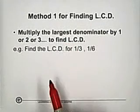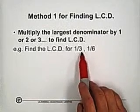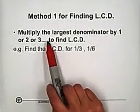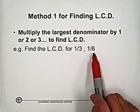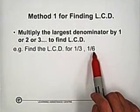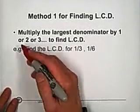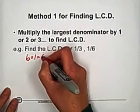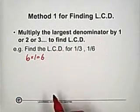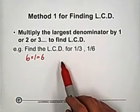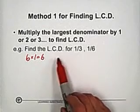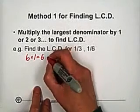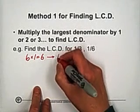The first example, to find the least common denominator for one-third and one-sixth. Followed by the rule, multiply the largest denominator. The largest denominator here is six by one to see if it is divided by each denominator. The sixth is divided by three-sixths, so the sixth is the least common denominator in this question.